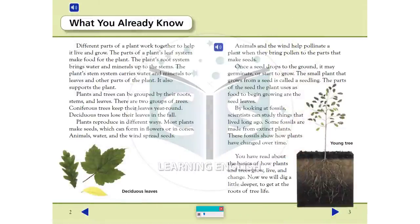What You Already Know: Different parts of a plant work together to help it live and grow. The parts of a plant's leaf system make food for the plant. The plant's root system brings water and minerals up to the stems. The plant's stem system carries water and minerals to leaves and other parts of the plant. It also supports the plant.